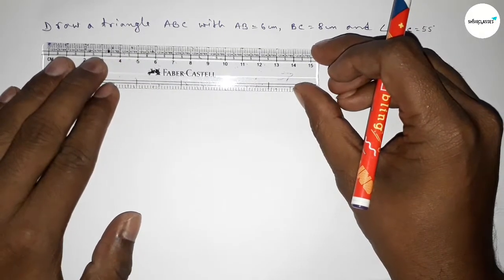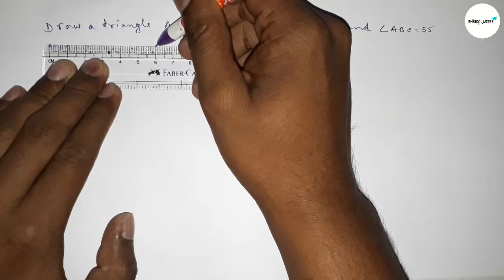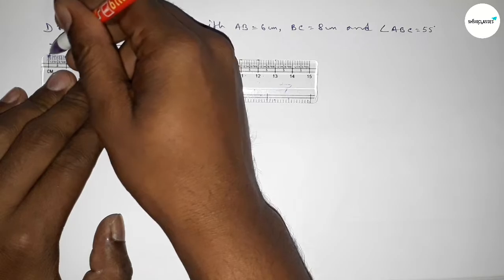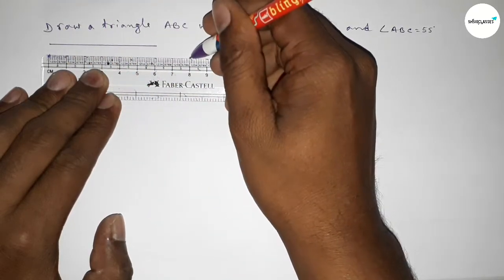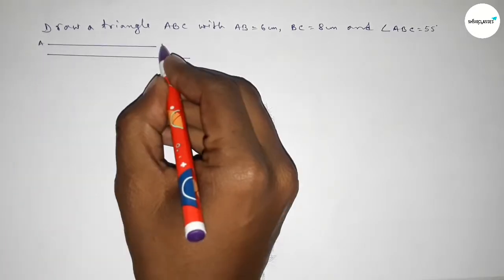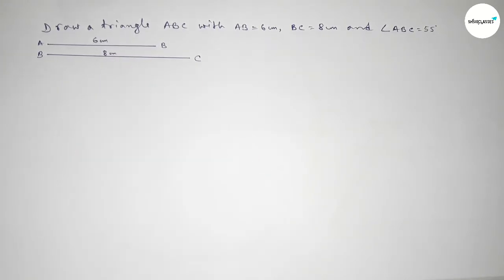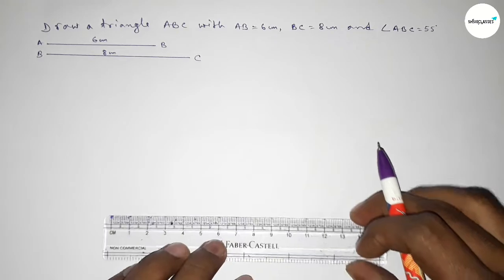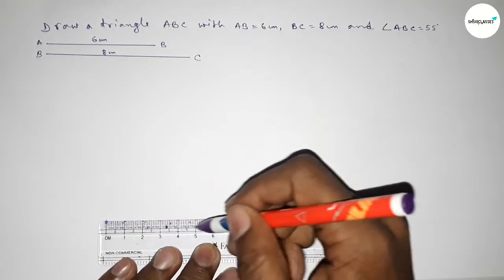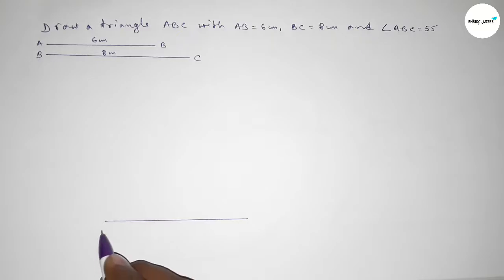First, drawing line AB of 6 centimeters: 0, 1, 2, 3, 4, 5, 6. Then drawing line BC of 8 centimeters: 0, 1, 2, 3, 4, 5, 6, 7, 8. Now drawing the base line BC of length 8 centimeters, marking point B on one end and point C on the other.